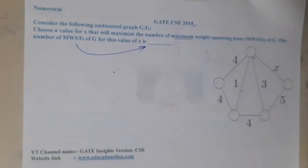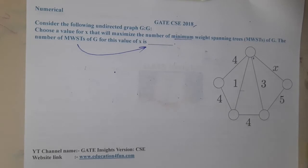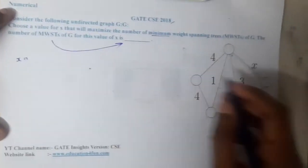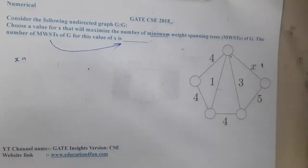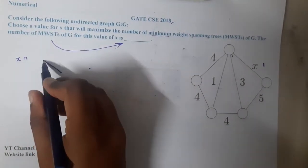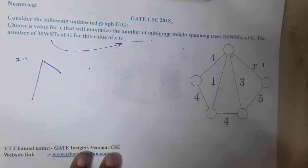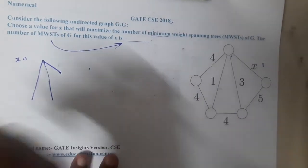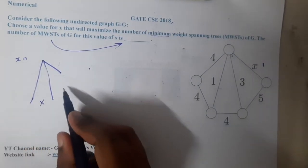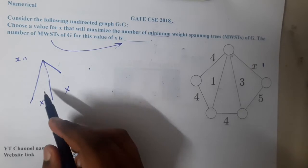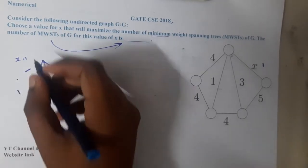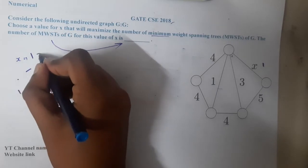It's quite an easy question. Let us start with value x=1. If the value of x is 1, I will be selecting this particular edge, then this particular edge. After that I am forced to select this edge because that cost is 3. From here I cannot select this edge or this edge, so I have one option here and one option here.